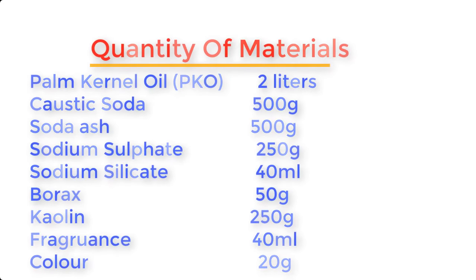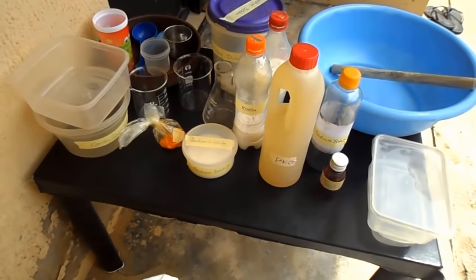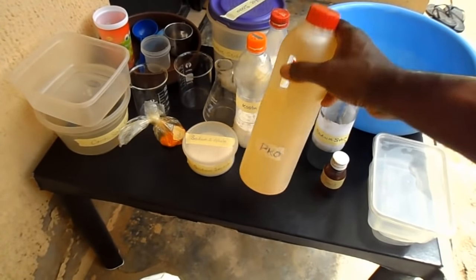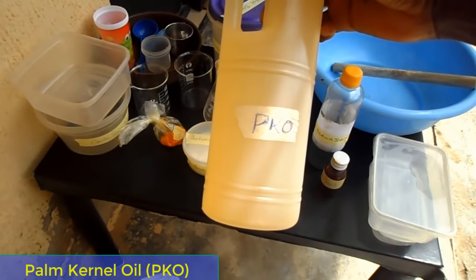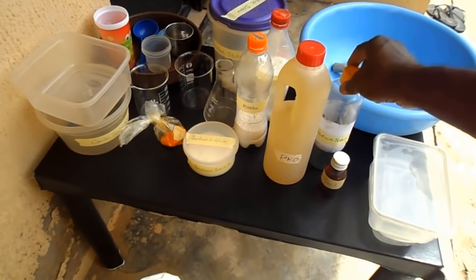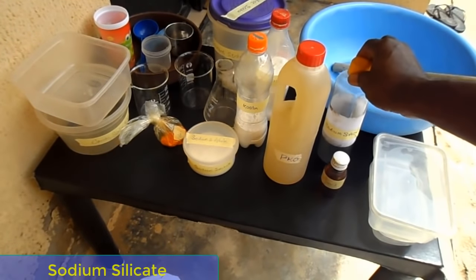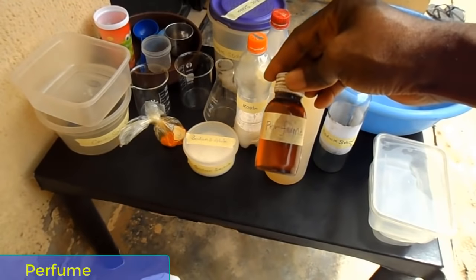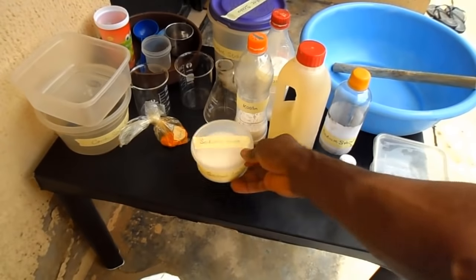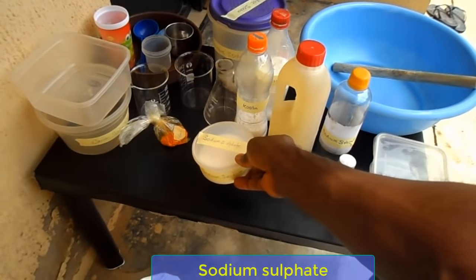Now let me introduce you to the chemicals and equipment we will be using. This is our palm kernel oil, also called PKO. This is our sodium silicate. This is our perfume, used to add fragrance to the soap. And this is our sodium sulfate.